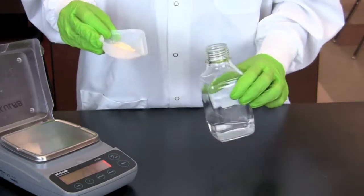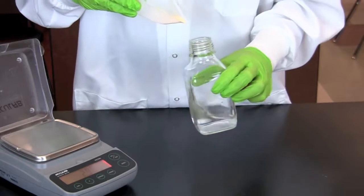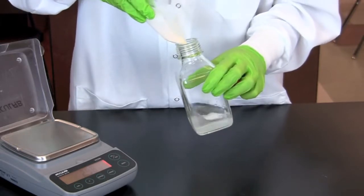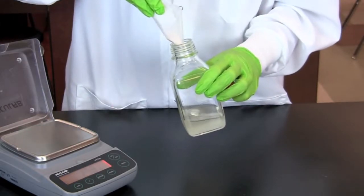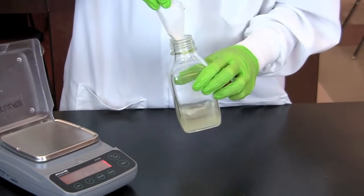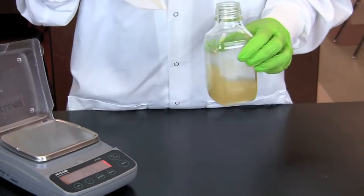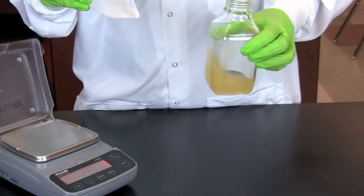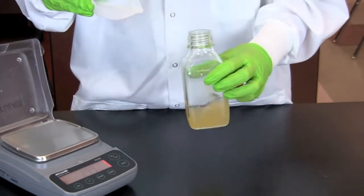The LB agar powder is then added to 100 milliliters of purified water pre-measured in a reagent bottle. The powder is added slowly while constantly swirling the bottle. Swirl until no clumps are present. When finished adding the agar powder, the solution will appear cloudy since the powder is not completely dissolved.